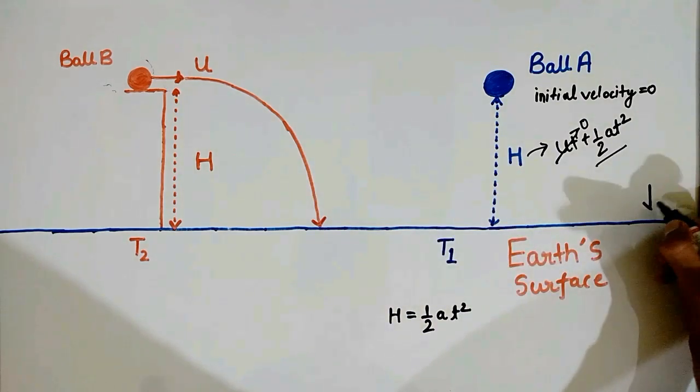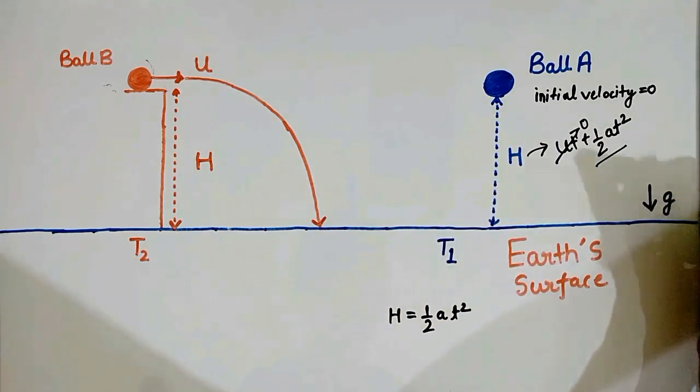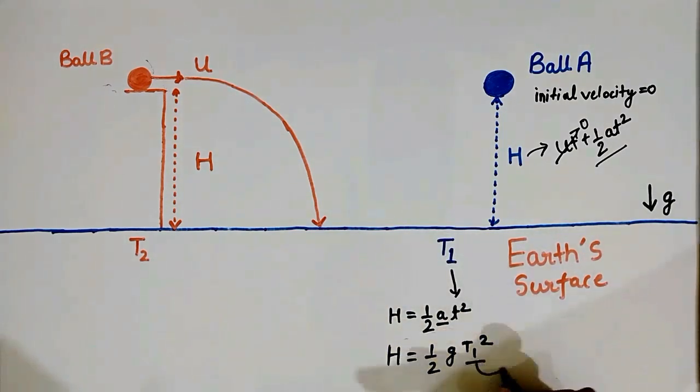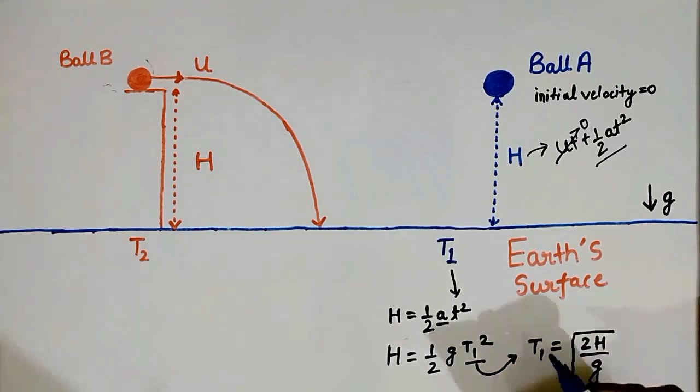Now in this case the acceleration is equal to acceleration due to gravity which is small g and the time taken is T1. So we can calculate the value of T1 which will be equal to under root 2h by g.